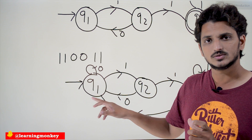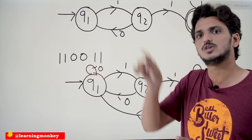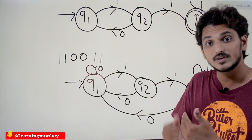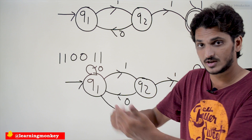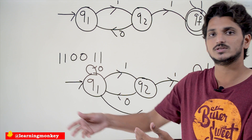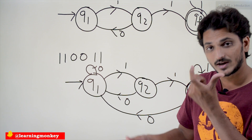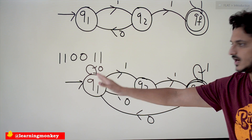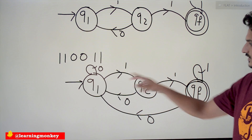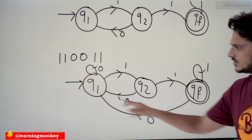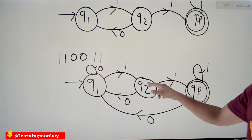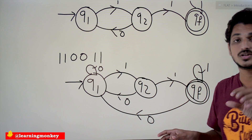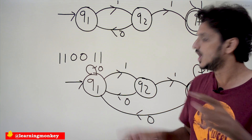Whenever we find zero on q1, we stay on q1. Whenever we find one, take one step to q2; find another one, take one step to qf. If we find two consecutive ones, go to the final state, otherwise go back again. So: zero on q2 goes back to q1, then q1, then on finding one-one we reach the final state. This is how we construct the Deterministic Finite Automata.